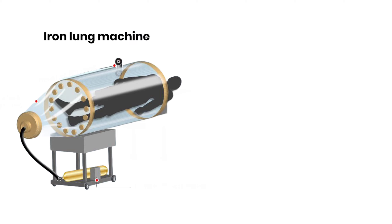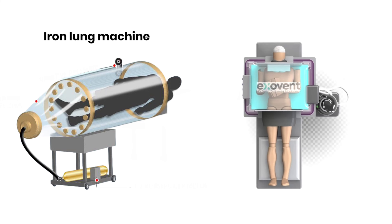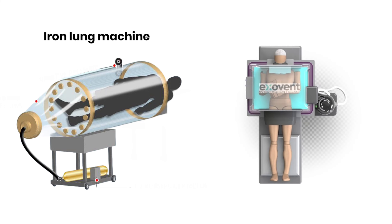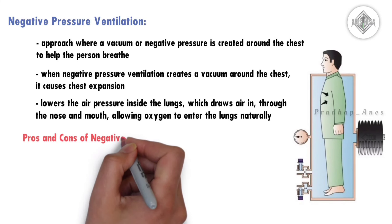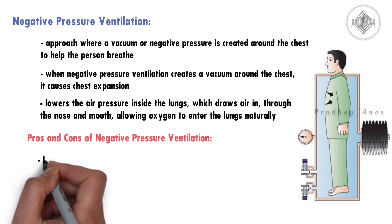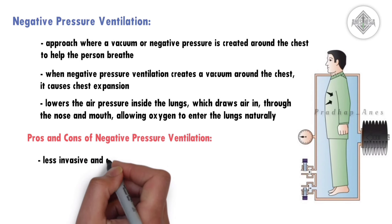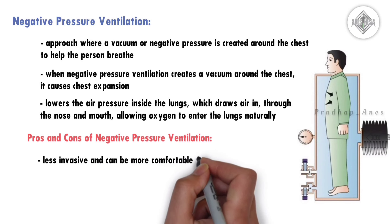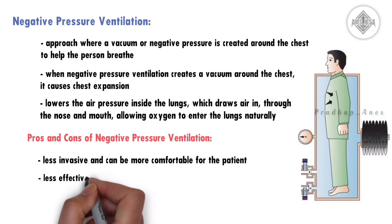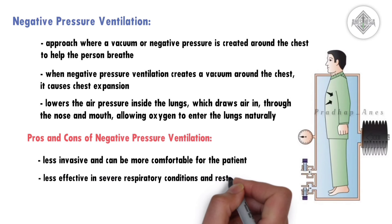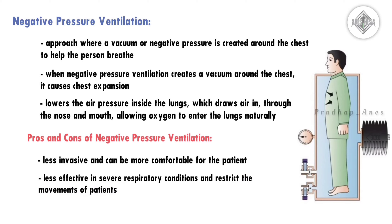In older devices like the iron lung, the patient's body was sealed inside a chamber. In newer devices, negative pressure ventilation still expands the chest to pull in air, but they're more comfortable and less restrictive than the old iron lung chambers. Negative pressure ventilation is less invasive and can be more comfortable for the patient. However, it may be less effective in severe respiratory conditions and restrict the movements of patients.